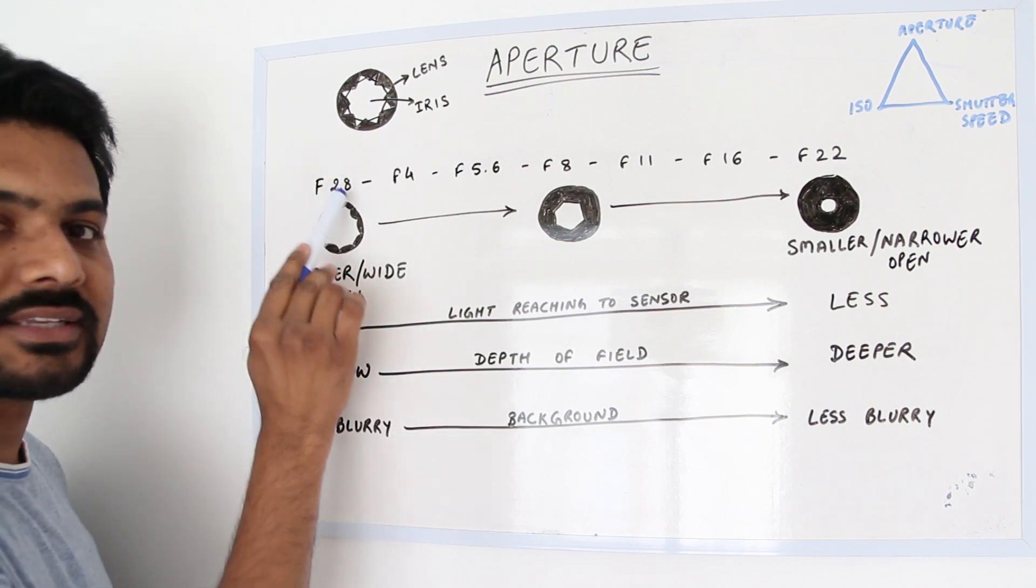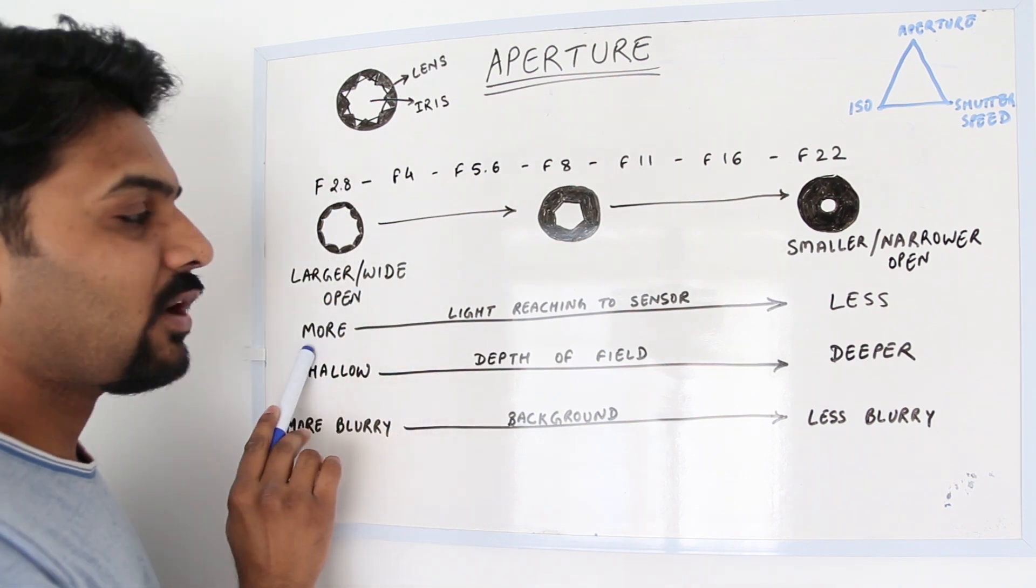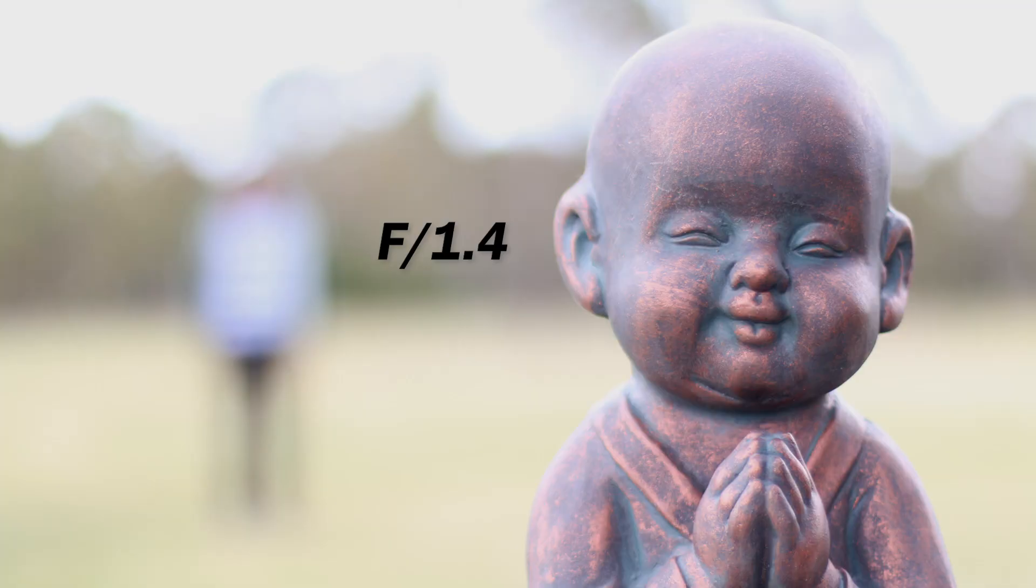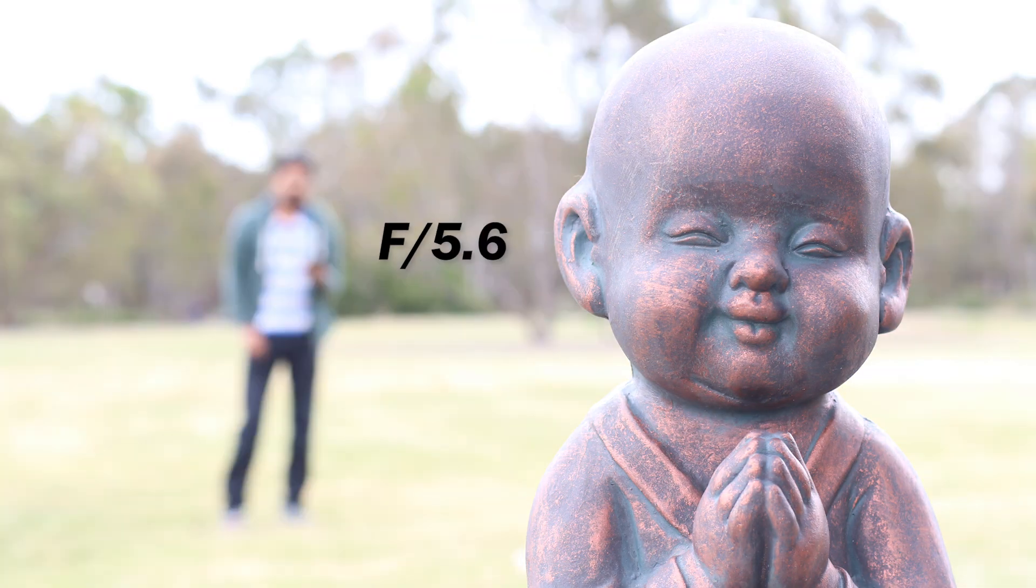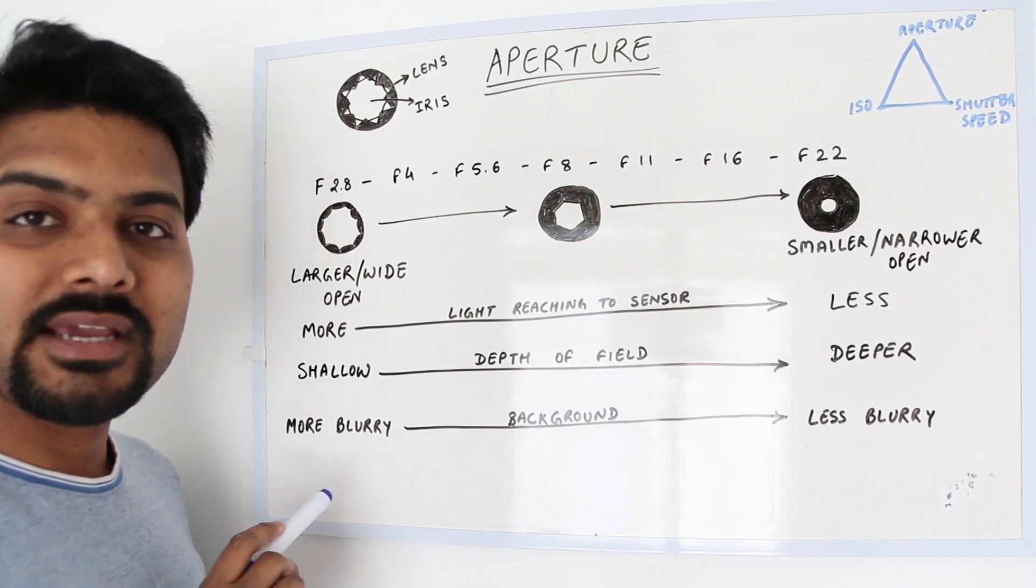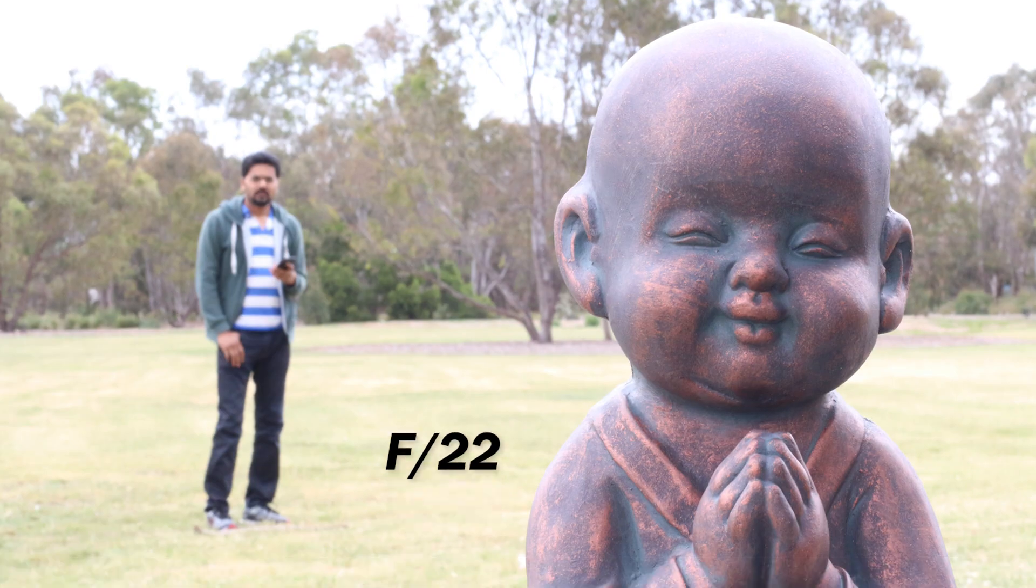This allows more light to reach the sensor, which gives a shallower depth of field. The background blur you achieve with the highest aperture like f/2.8 will be much blurrier compared to the lowest aperture like f/22 or higher.